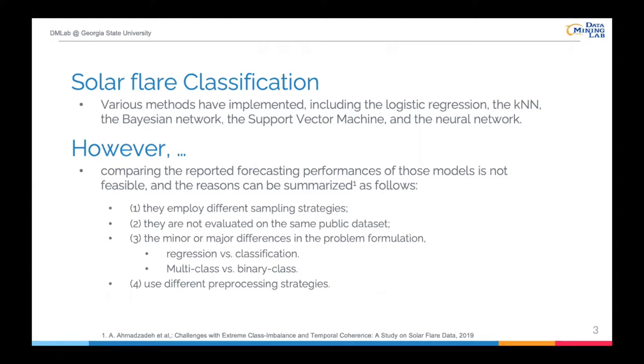However, comparing the reported forecasting performances of these models is not feasible, and the reasons can be summarized as follows. First, these studies employ different sampling strategies. Second, they are not evaluated on the same public dataset. Third, there exists minor or major differences in the problem formulation. For example, some studies work on regression tasks, while others focus on classification issues. Even for the classification issue, it can be classified into multiple or binary classification problems. The last reason is these works apply different preprocessing strategies. In sum, each of these decisions changes the difficulty of the task, which makes the numerical comparison of the reported scores meaningless.